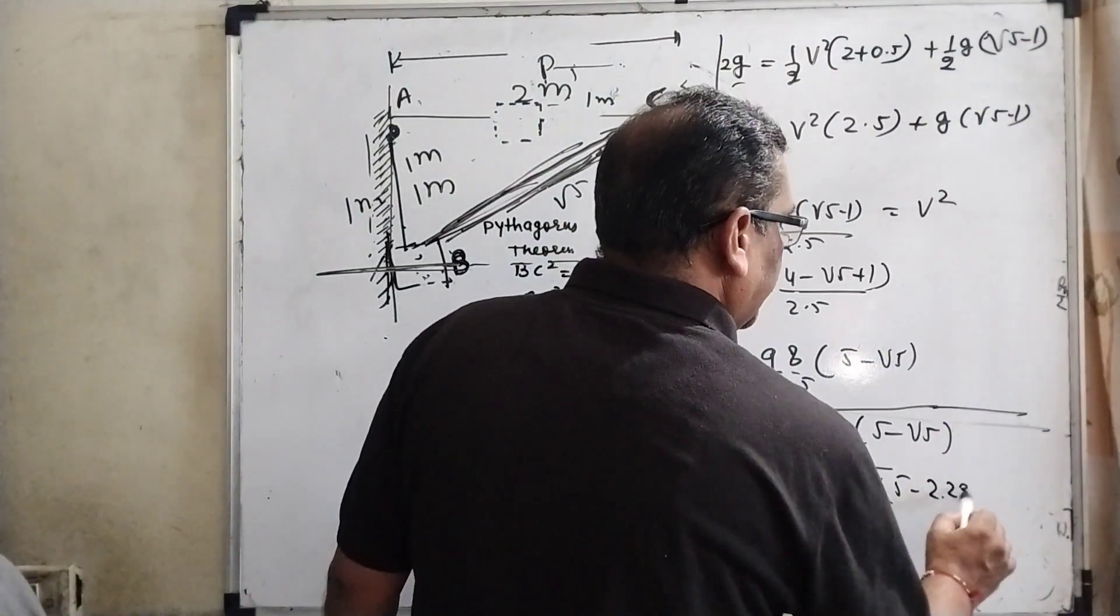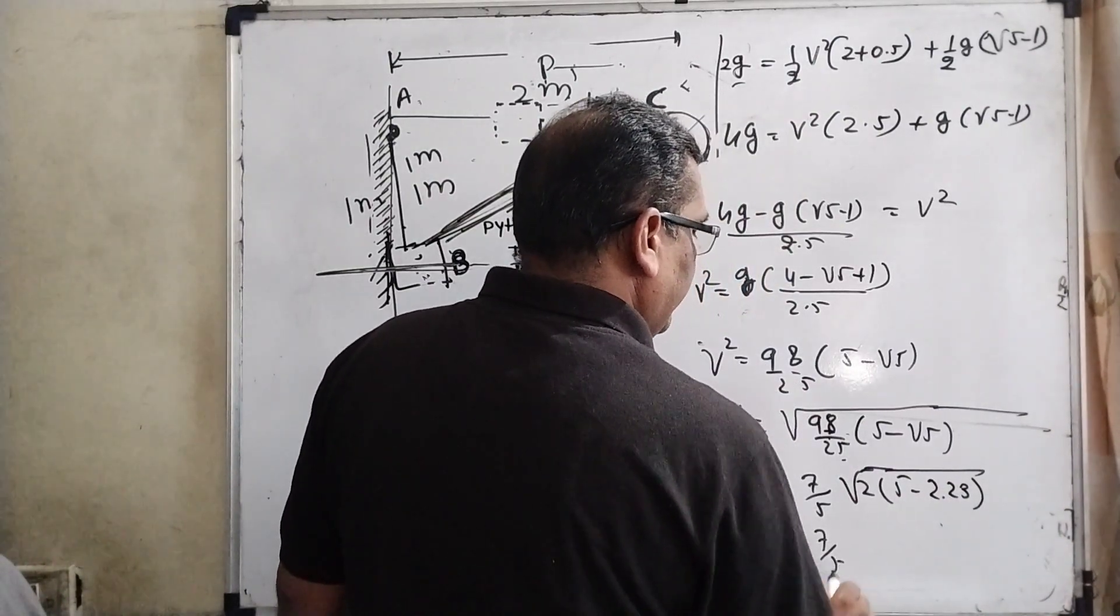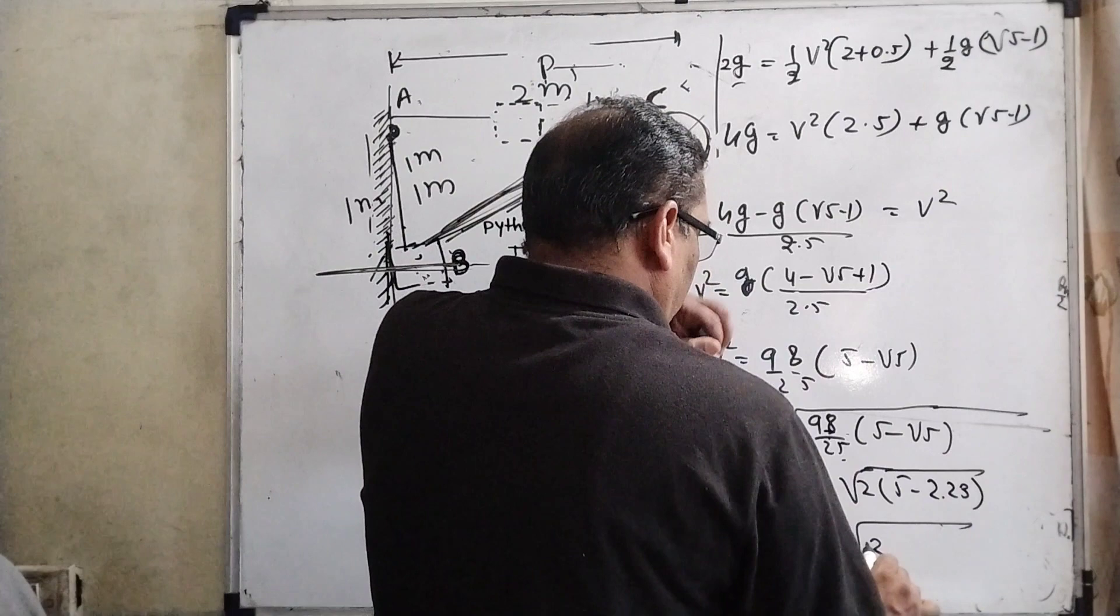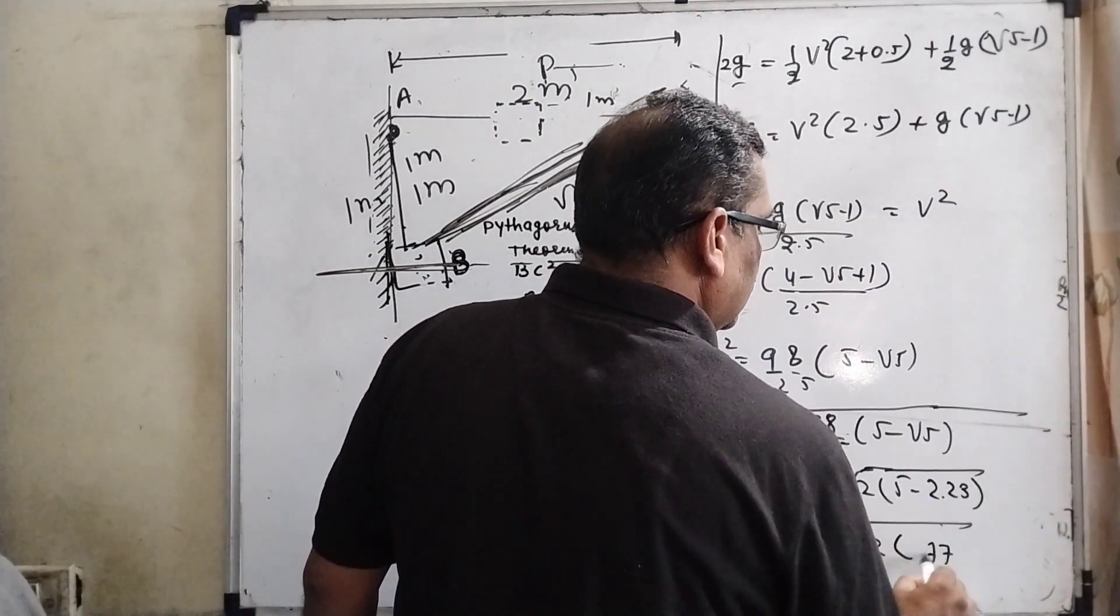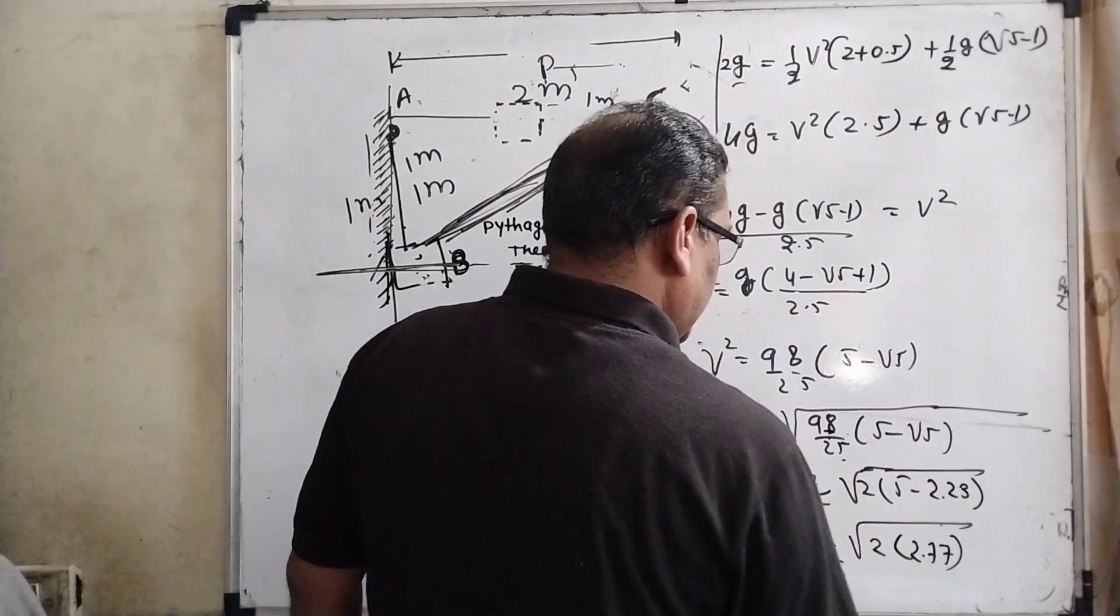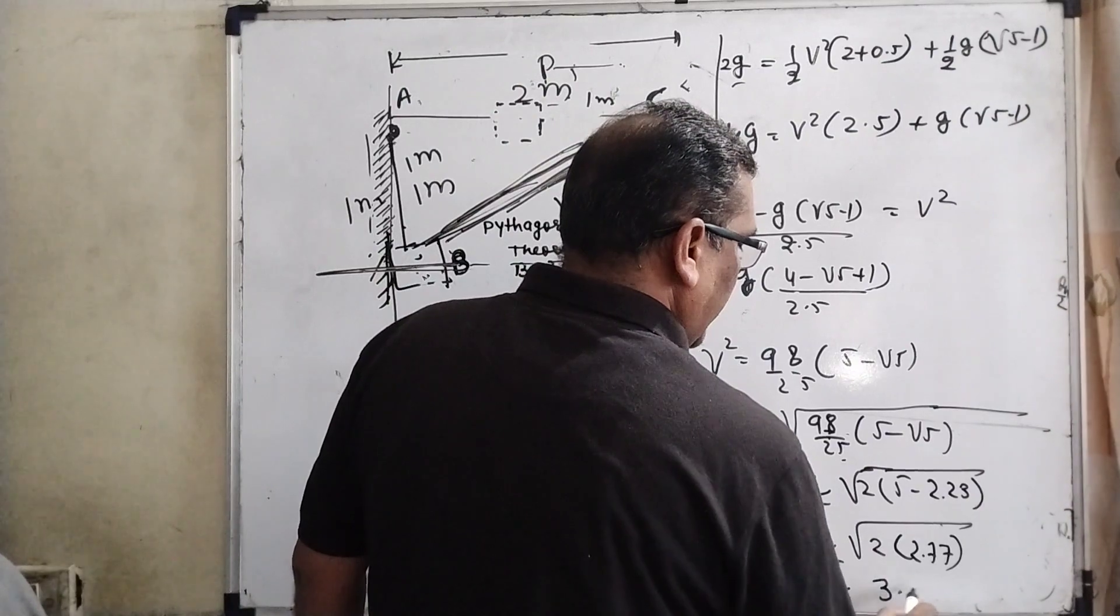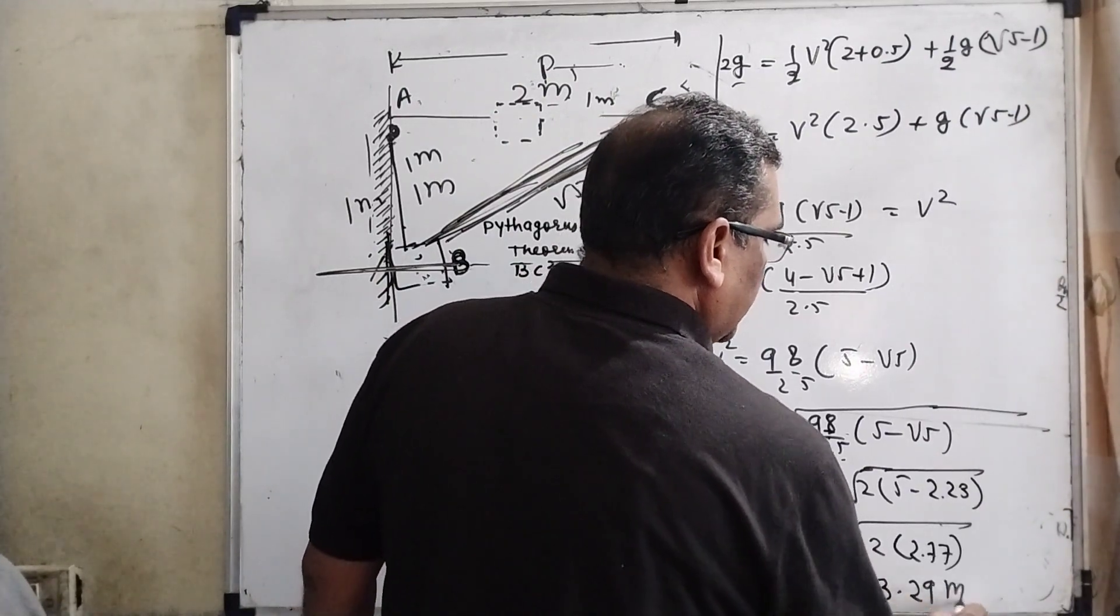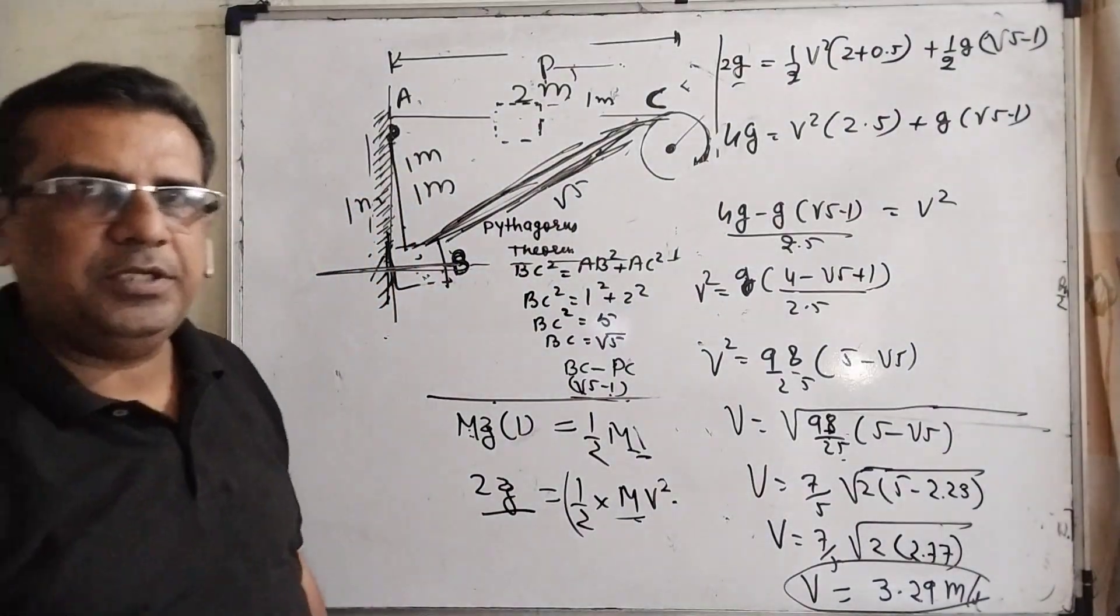Substitute here: v equals 7 root 2.77. After solving we will get 3.29 meters per second approximately. I hope you understand this question.